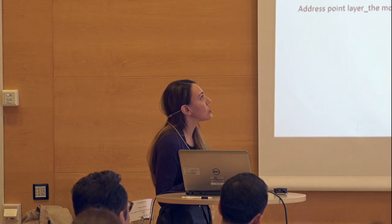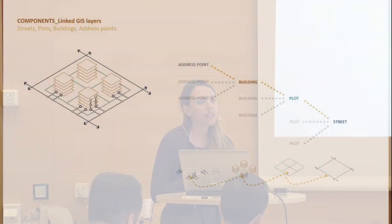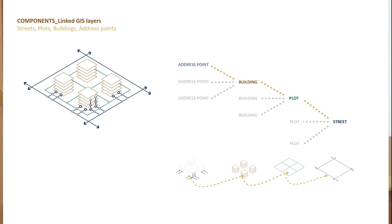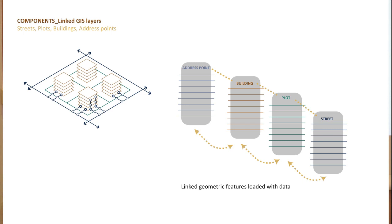This information is also linked. To put it simply, each address point is linked to each particular building it belongs to, then to the plot it belongs to, and to the street it belongs to, and vice versa. Each street has an amount of plots, more buildings and more address points, so we go from the least aggregated element to the most aggregated element and vice versa. These geometric features come with a large set of information, and this information is also linked.